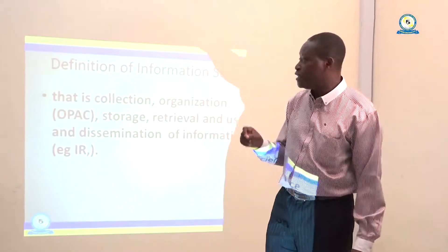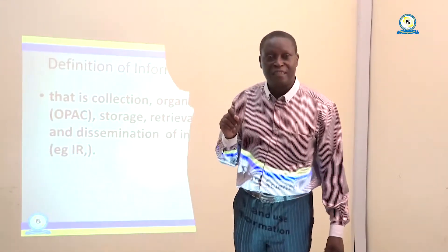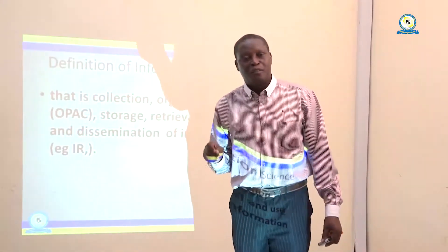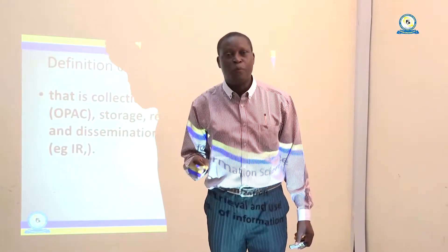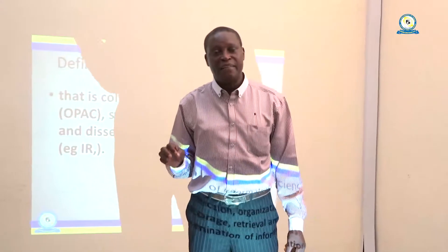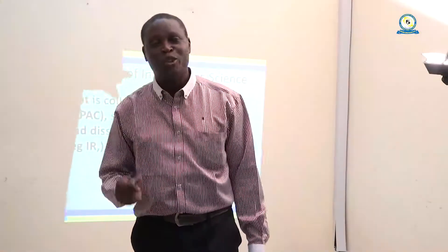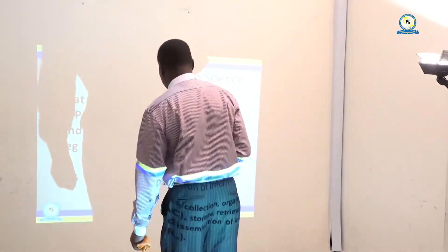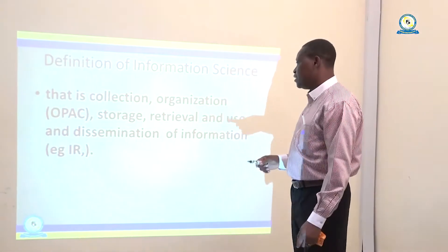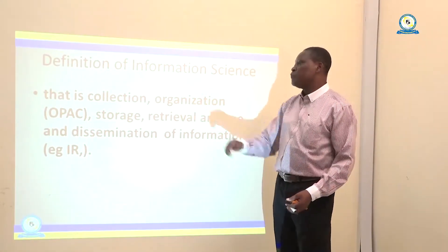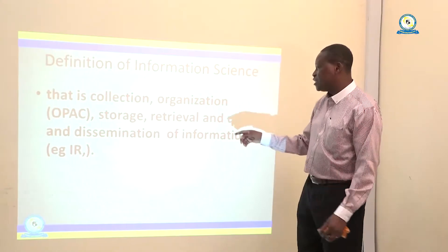The advantage is that it helps students to know how a dissertation or thesis looks like, but another advantage is that it helps them learn how people argue when writing their dissertations. It also helps in literature review. As Einstein put it, we all stand on the shoulders of giants. So in order to write a dissertation or do research, you have to consult the work of other people, and the institutional repository helps in dissemination of information.